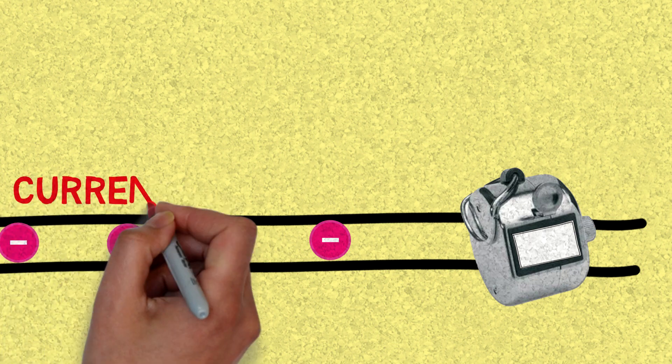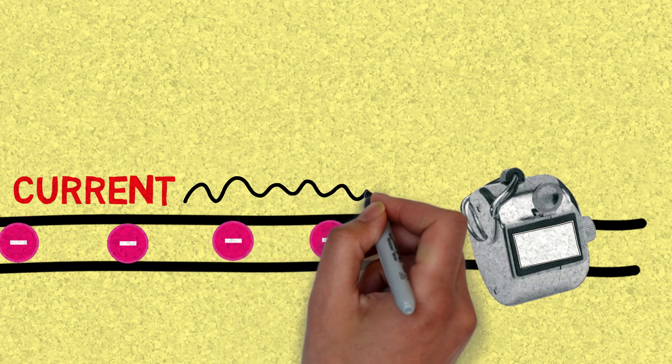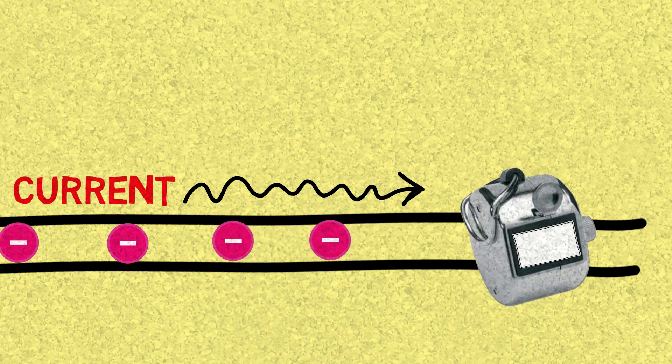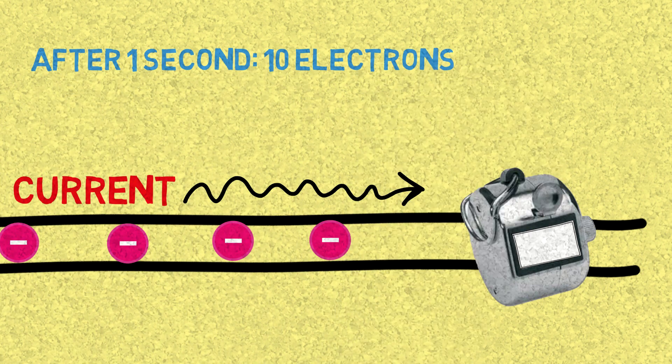After each second, it tells us exactly how many electrons were able to go through due to the current. So if, after one second, only 10 electrons went through, our detector screen displays 10 for 10 electrons.